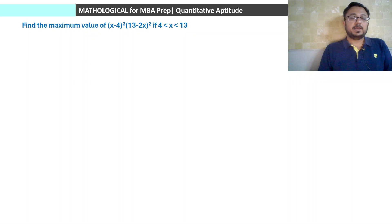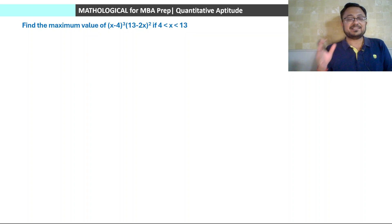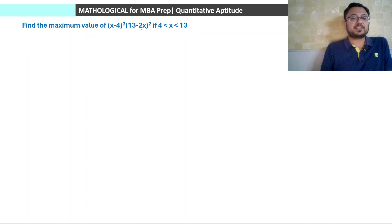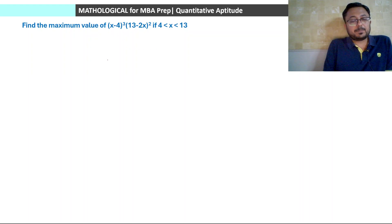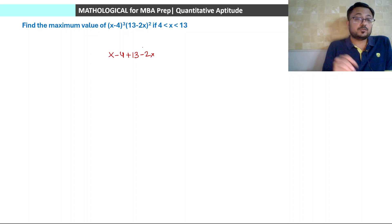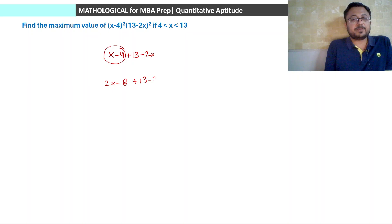Next question: find the maximum value of (x minus 4)³ into (13 minus 2x)² if 4 is less than x is less than 13 by 2. Here if we directly add x minus 4 and 13 minus 2x, the x does not cancel. So we multiply x minus 4 by 2 to get 2x minus 8. Then 2x minus 8 plus 13 minus 2x gives 5, and 2x cancels out.